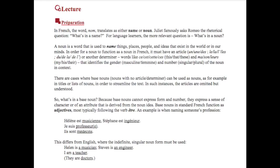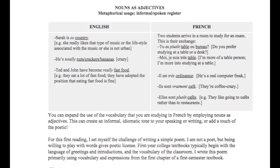I give them a breakdown of the word nom in French — meaning name or noun — with examples: Hélène est musicienne, Stéphane est ingénieur. And I give them the equivalent in English, because we do this to some extent: 'Sarah is so country' — she really likes that type of music or lifestyle. 'He's totally nuts or crackers or bananas.' 'Ted and John have become really fast food.' So we do use nouns adjectivally in English, but not quite as productively as in French.